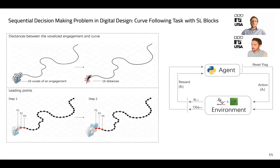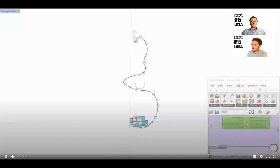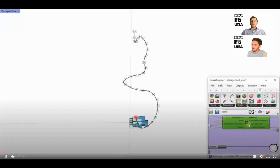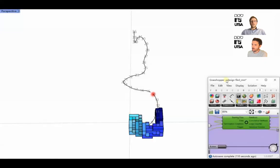The diagram on the left shows the curve-following task used in our experiments. Here, the agent needs to cover a given curve with a sequence of SL engagements. This video shows an example of the behavior of an agent that is learning to solve the curve-following task.